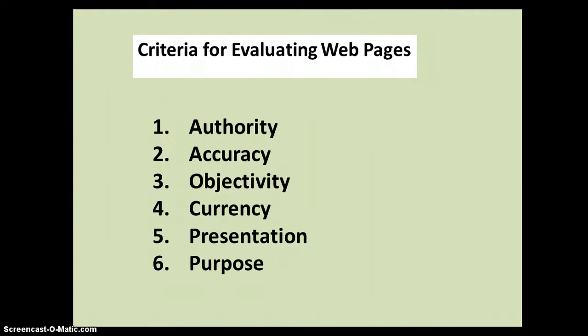Let's talk about criteria to use to evaluate whether or not you're getting good information. There are six things to look for: authority, accuracy, objectivity, currency, presentation, and purpose.